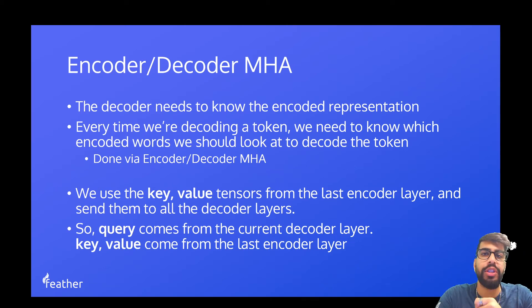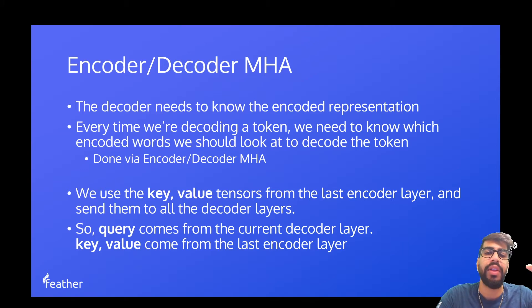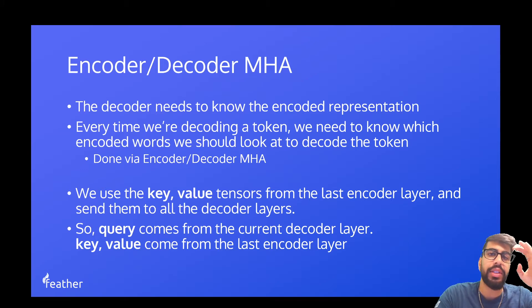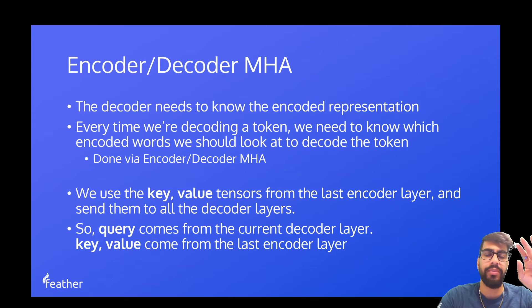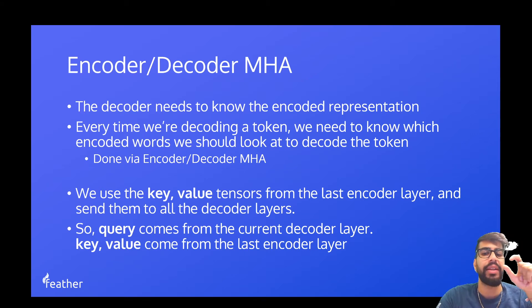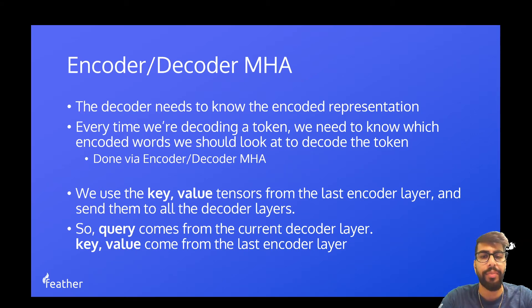What we're going to do is use the key and value tensors from the last encoder layer and send them to all the decoder layers. The query comes from the current decoder layer, and the key and value come from the last encoder layer from our encoder stack.